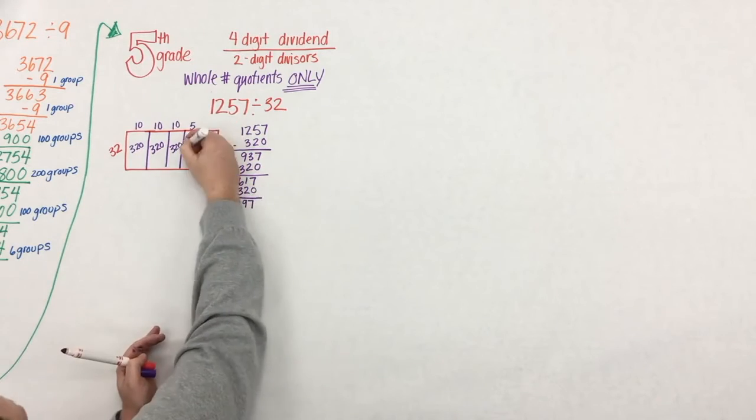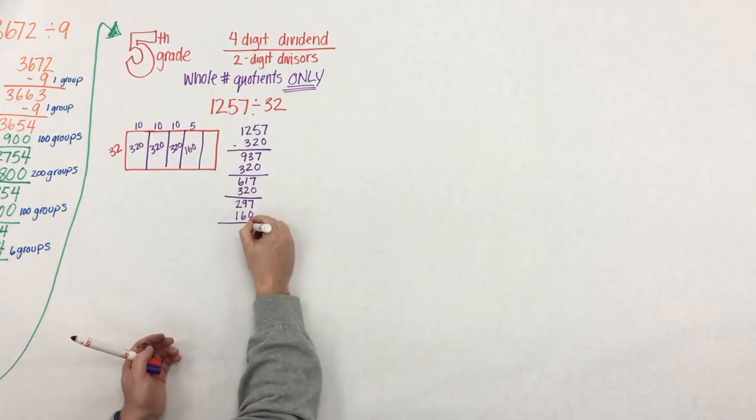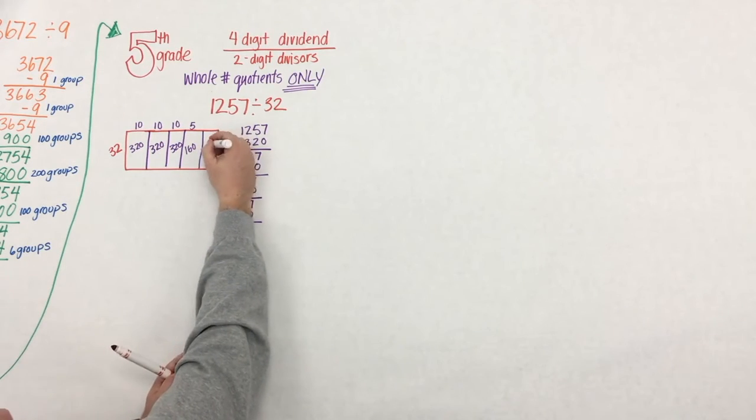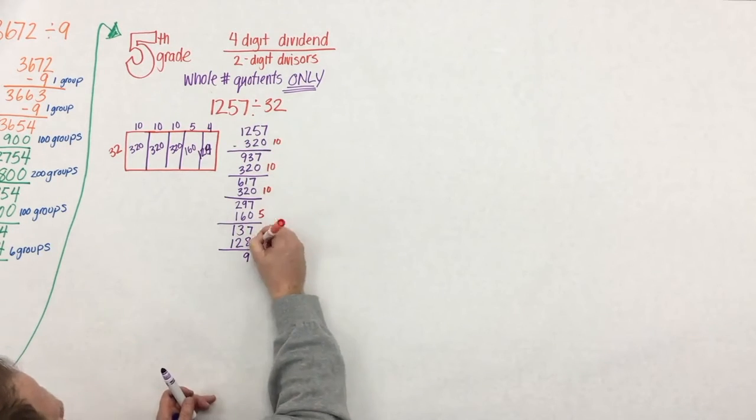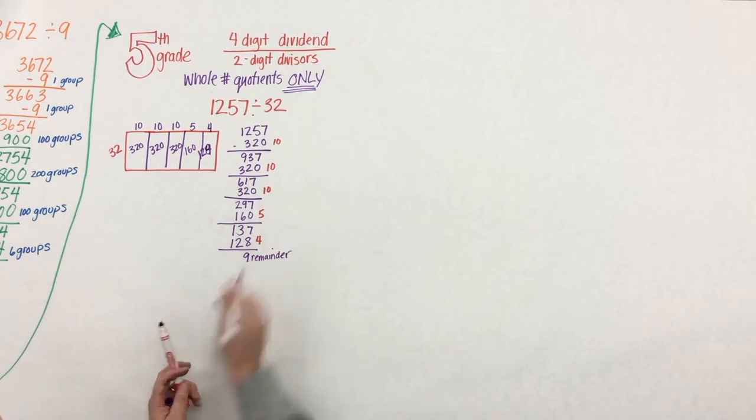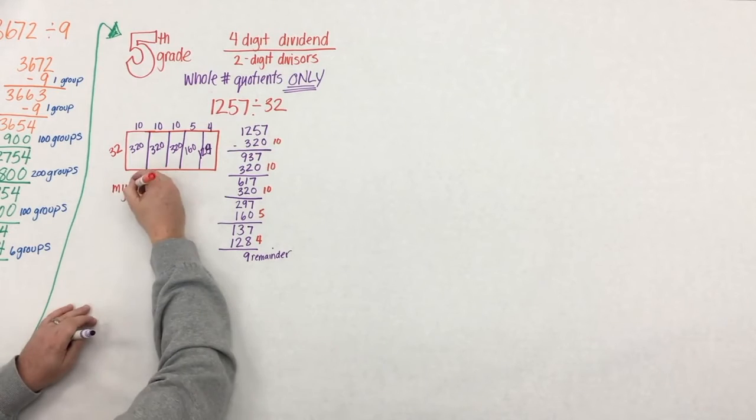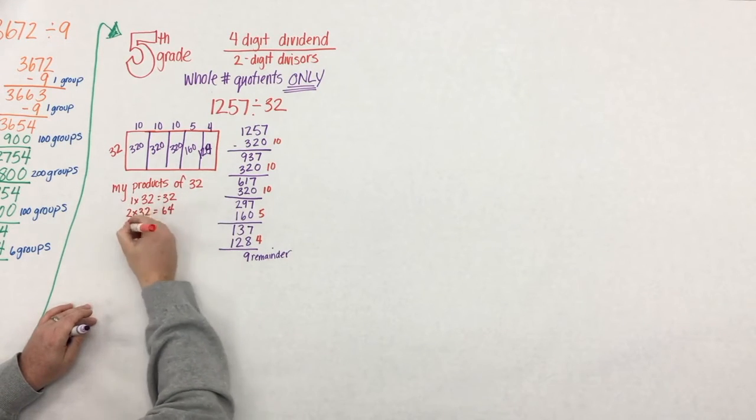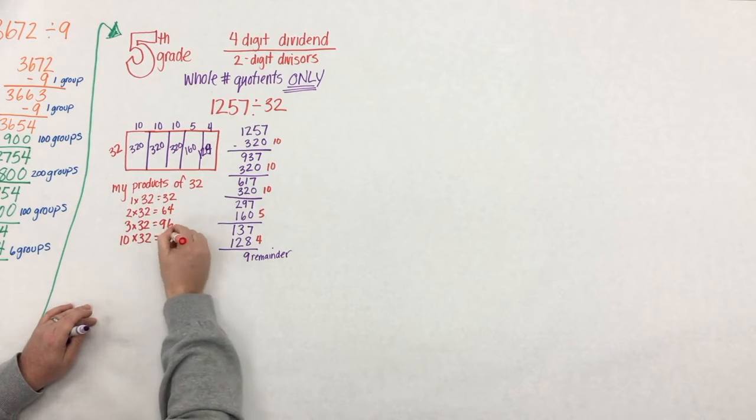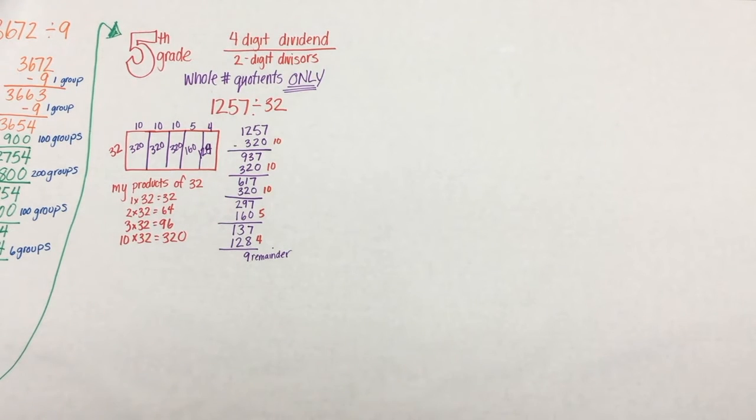So here, we make that connection again, between the representation and the expression. And we write our partial quotients off to the side, just helps us keep track. So students might not know all their multiplication facts, but they do know three or four. So here's their products of 32. Every student will know these. Let them start there.